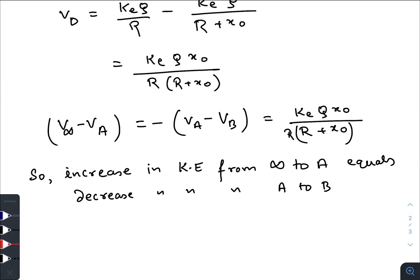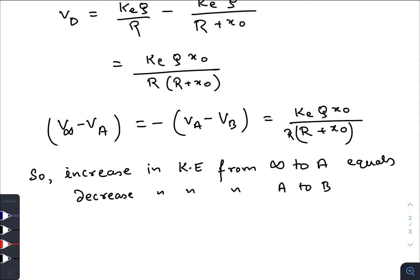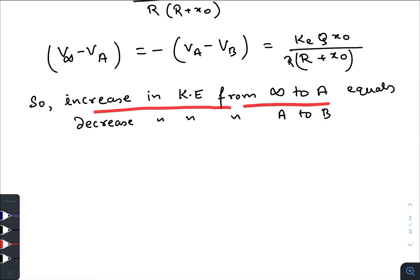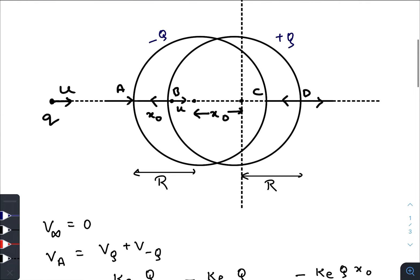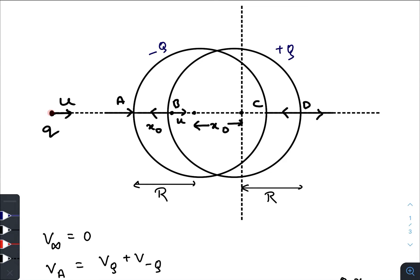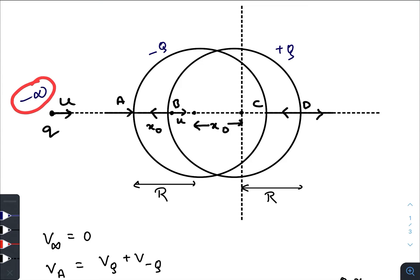The potential difference between infinity and point A equals the negative of the difference between A and B. This means the increase in kinetic energy from infinity to A equals the decrease in kinetic energy from A to B. When the particle is thrown from minus infinity with initial velocity u, there is some initial kinetic energy of half m u squared. When the particle comes from minus infinity to point A, there is an increase in kinetic energy and decrease in potential energy.